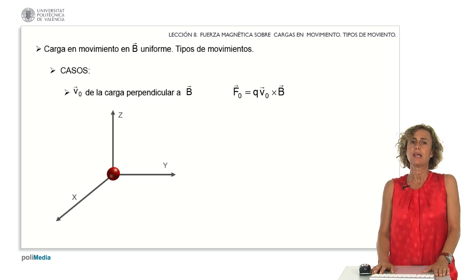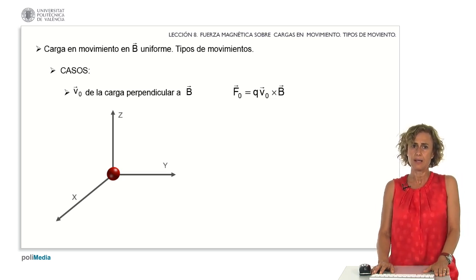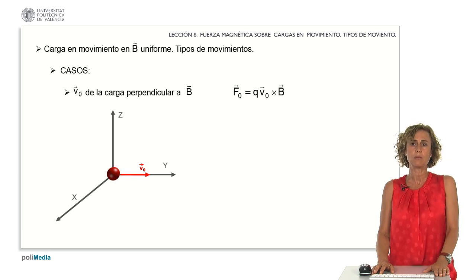Let's move on to the second case where the velocity of the charge is perpendicular to the magnetic field, and this magnetic field is uniform. Let's consider that the initial velocity of the charge goes in the direction of the y-axis with positive sense and the magnetic field is uniform, aligning along the z-axis.